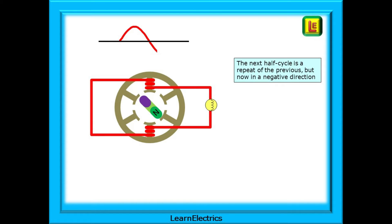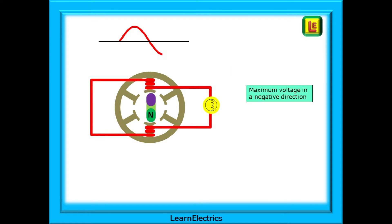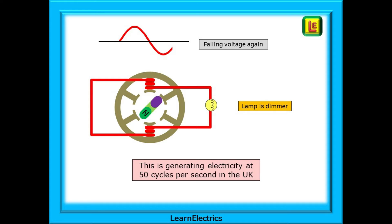The next half cycle is a repeat of the previous, but now in a negative direction. As the rotor turns, AC voltage is generated in the opposite sense and the lamp begins to glow. Now the rotor is in line with the red coils and the magnetic flux is cutting across the coils at a maximum. The voltage has peaked at a maximum negative value.